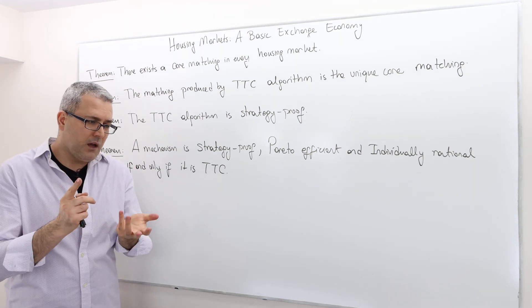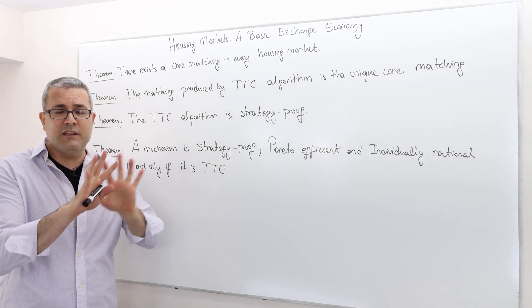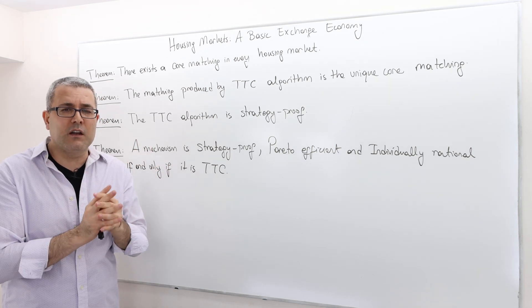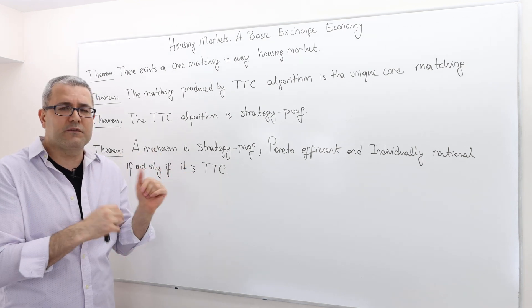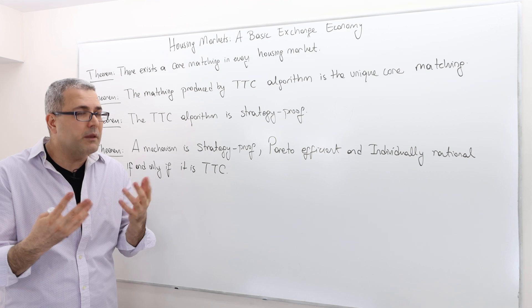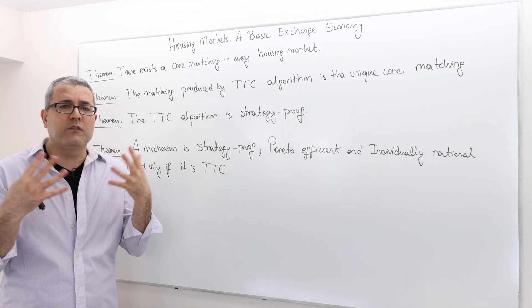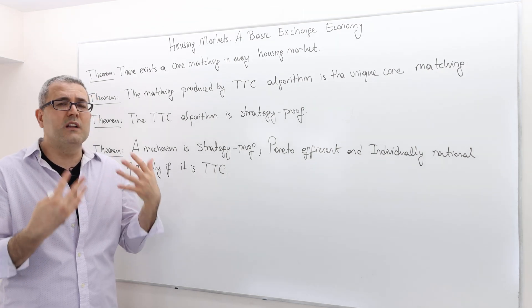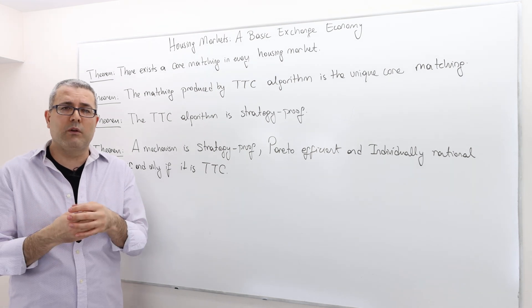Remember we talked about the DA algorithm. It can be applied to a different environment. But we may slightly modify it and apply to this framework, or a serial dictatorship. We can apply it here, maybe with some modification. So the thing is, we can come up with a bunch of other mechanisms. But the question is, are they going to satisfy those nice properties like strategy proofness, Pareto efficiency, and so on and so forth.